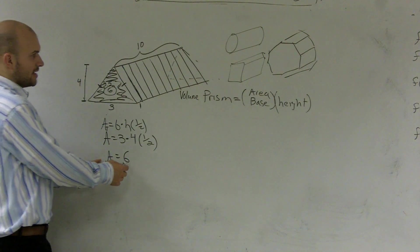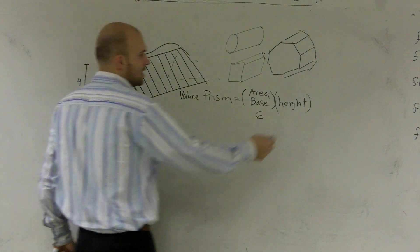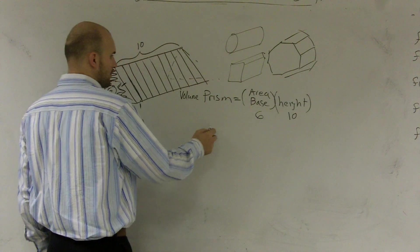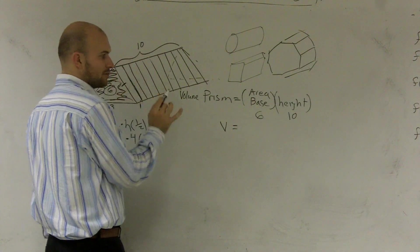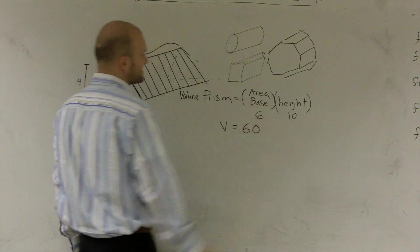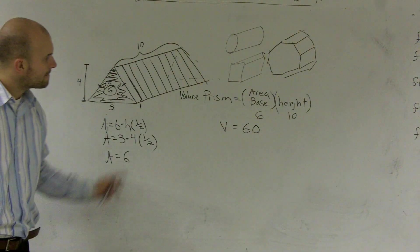So I just take the area, which was 6, and multiply it by the height, which is 10. Therefore, the volume of this prism, the triangular prism, is going to equal 60. And that's it.